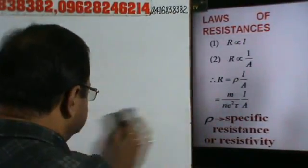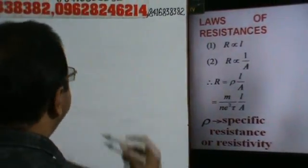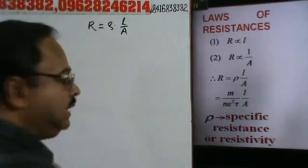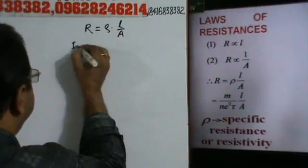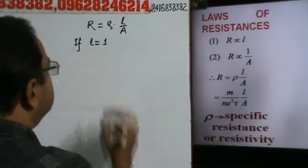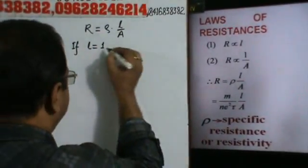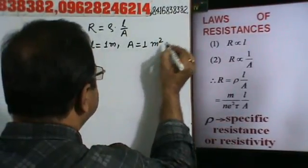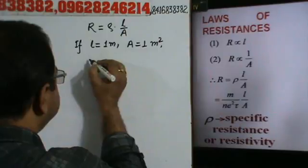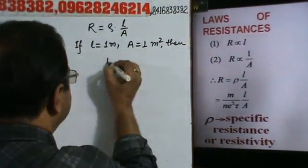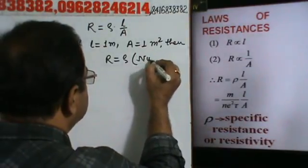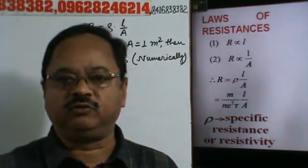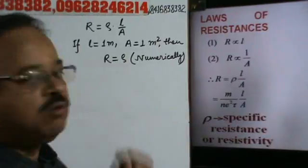Ab yahaan se hum define kar sakte hain resistivity ko. Our formula is R equal to rho into L by A. Now, if L is equal to 1 meter and A is equal to 1 meter square, then R is equal to rho. Note that dimensionally they are not equal, but numerically R will be equal to rho.